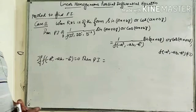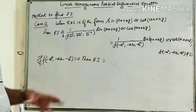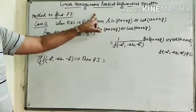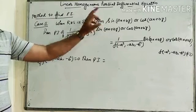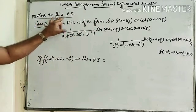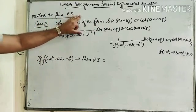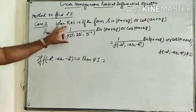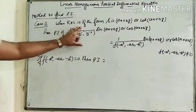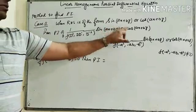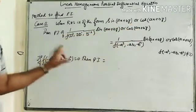Hello friends, this is another lecture on Linear Homogeneous Partial Differential Equations. Today we will discuss the second case of finding the particular integral. What is the second case? When the RHS is of the form sin(Ax + By) or cos(Ax + By).